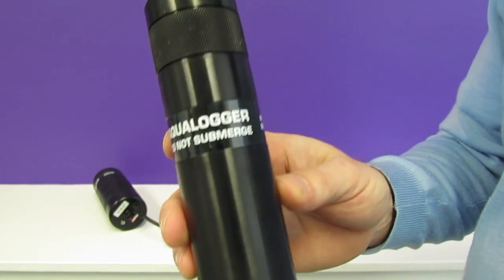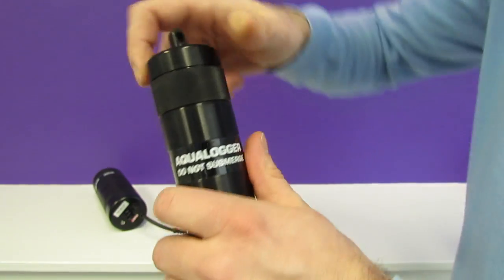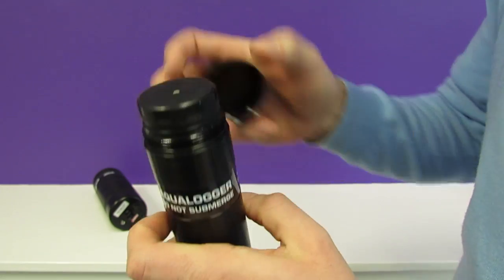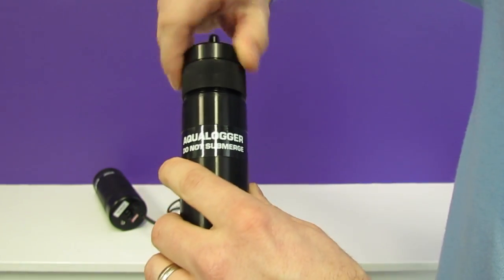On the top end we have the battery compartment which we can unscrew to reveal two standard C cell batteries.